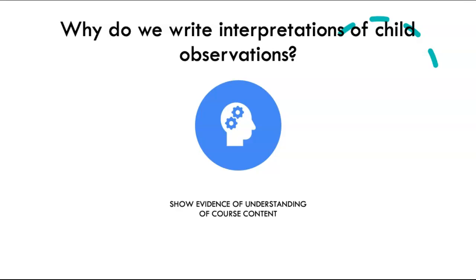I'd like to start off by answering this question: why do we write interpretations of child observations? The main reason is to show evidence of your understanding of course content. It is during child observation interpretations that you show that you are understanding what you're learning in the class. So after you write an interpretation, go back and ask yourself: does this show that I understand development?